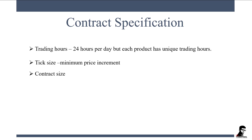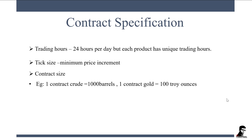The next parameter is contract size. Each product has its own contract size. For example, one contract of crude oil equals 1,000 barrels, whereas one contract of gold is 100 ounces.